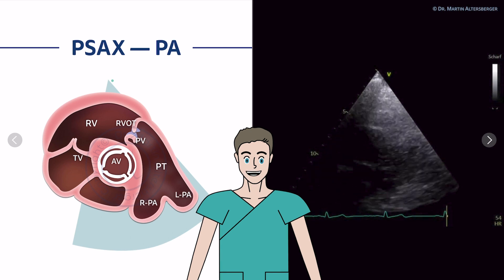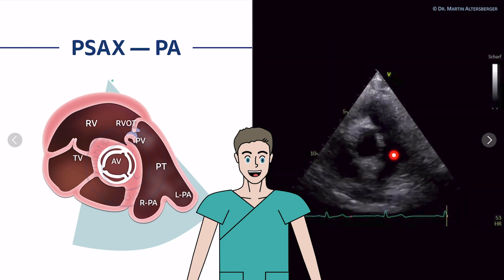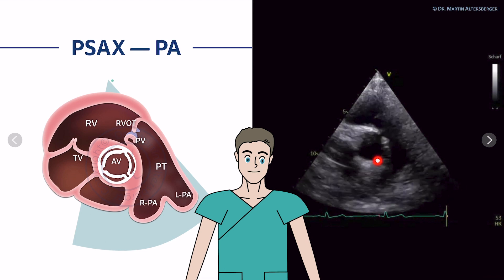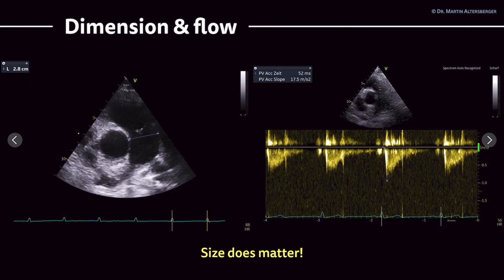Now focusing on the pulmonary artery: with suboptimal image quality, we can still identify the pulmonic valve, the pulmonic trunk, and the right and left pulmonary arteries, as well as parts of the ascending aorta. From this view, we can measure the pulmonic trunk and the RVOT — in this case both are definitely dilated. We can also use pulsed wave Doppler to quantify the pulmonary acceleration time; if it is below 60 milliseconds, it is definitely pathological and points towards elevated pulmonary pressures. If you have an enlarged pulmonic trunk, do not forget to mention it in your report.